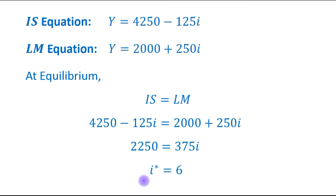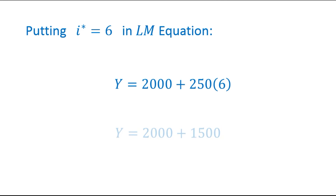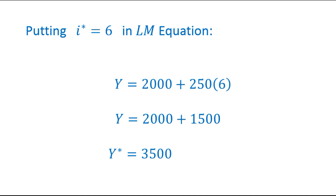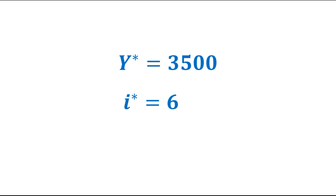This gives us the equilibrium interest rate i* equals 6. We will now incorporate this value into the LM equation. Putting i* equals 6 into the LM equation, we finally get the equilibrium output Y* equals 3500. So the final result is: equilibrium level of output is 3500 and equilibrium level of interest rate is 6.